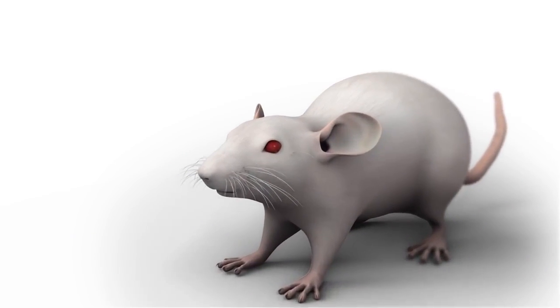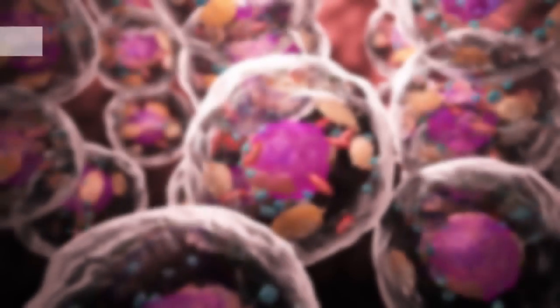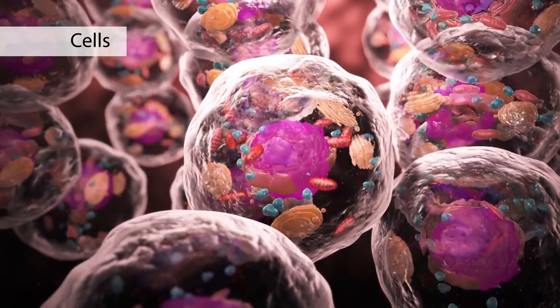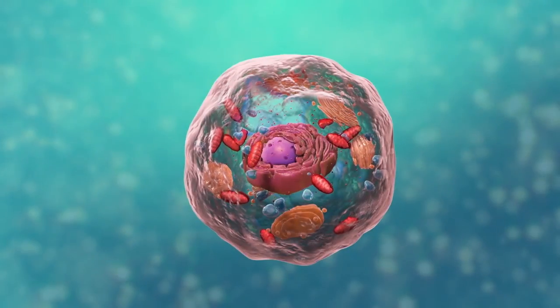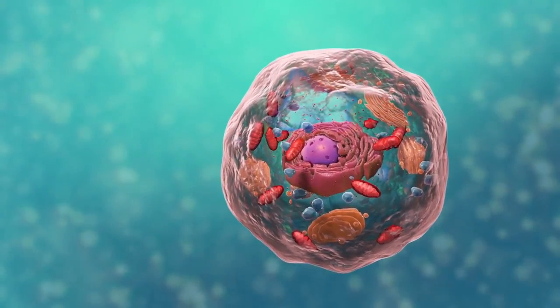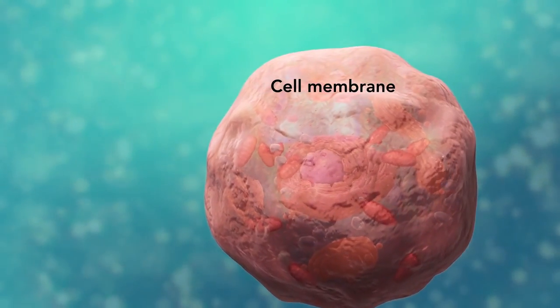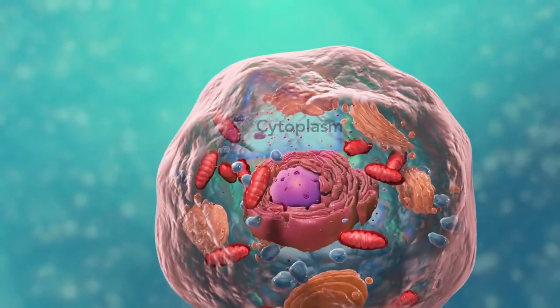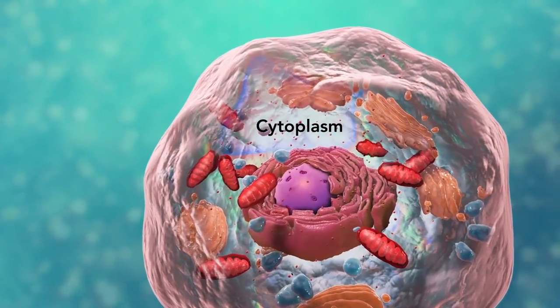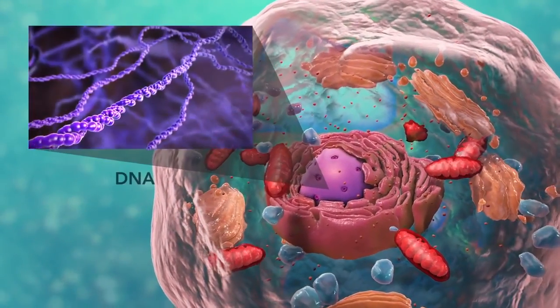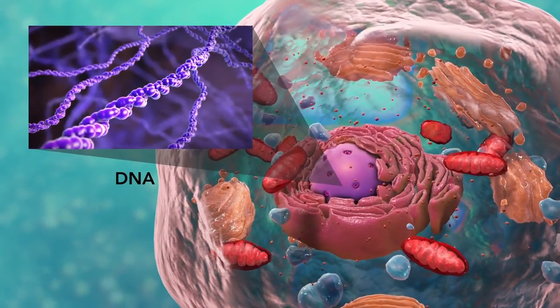Cells are the smallest living units of an organism. All cells have three things in common no matter what type of cell they are. All cells have a cell membrane which separates the inside of the cell from its environment, cytoplasm which is a jelly-like fluid, and DNA which is the cell's genetic material.